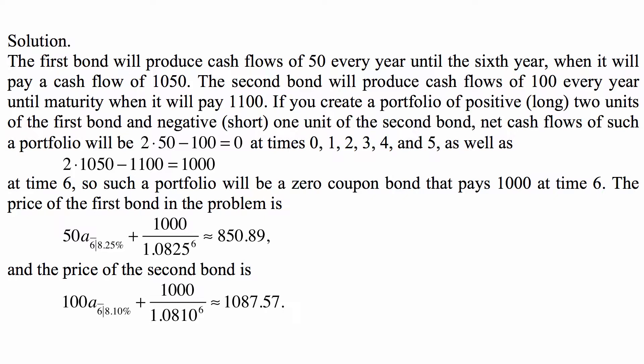And the price of the second bond is 100 times A angle 6 at 8.10% plus 1,000 over 1.0810 to the sixth. That's 1,087.57.